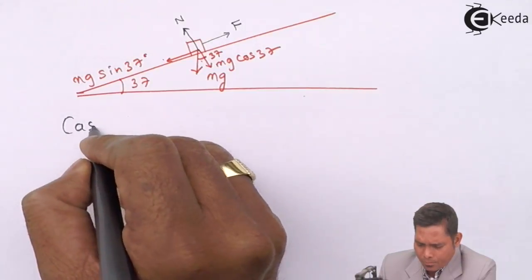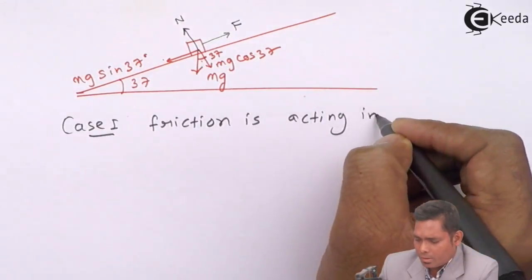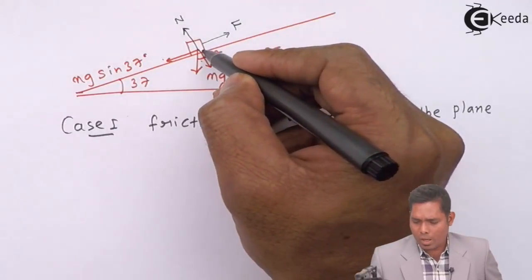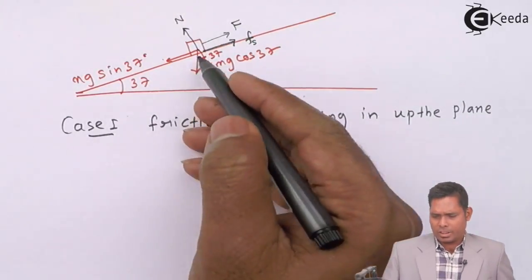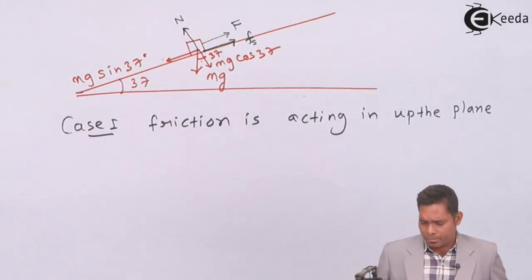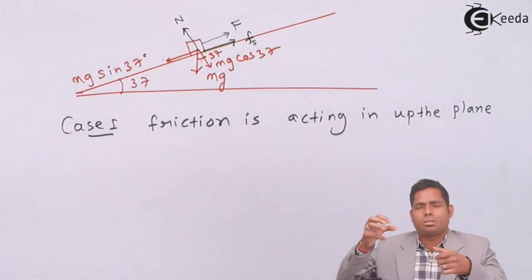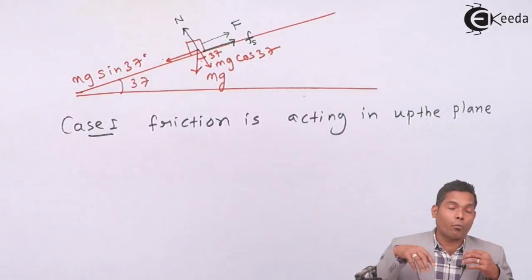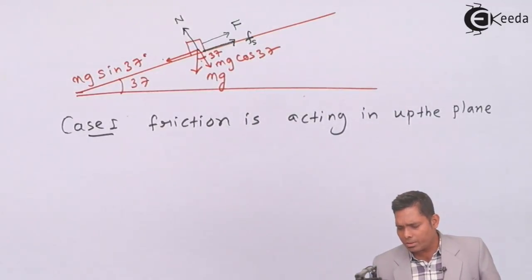We will take the case that friction is acting in the upward direction first. I assume that friction is acting up the plane as the force of static friction. It can be down also — we will analyze one by one. As the question states that the external force is applied to hold the block at rest, this means that the downward force Mg sin 37 is obviously more than the limiting force of static friction.